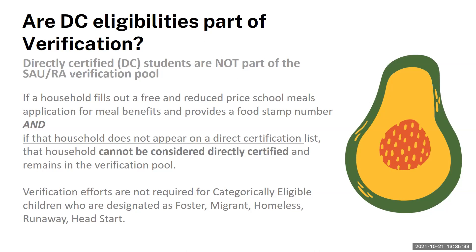Directly certified students are not part of the SAU or RA verification pool. If a household fills out a free and reduced price school meals application and provides a food stamp number, but does not appear on the direct certification list, that household cannot be considered directly certified and the application remains in the verification pool. Verification efforts are not required for categorically eligible children designated as foster, migrant, homeless, runaway, or Head Start. Categorically eligible children are considered DC if they are on the DC list or authorized by McKinney-Vento. Household applications that include a SNAP number are included in the verification pool.